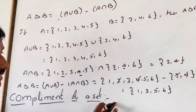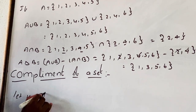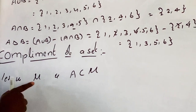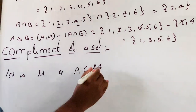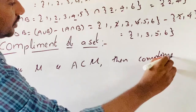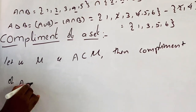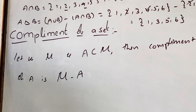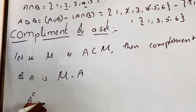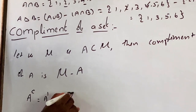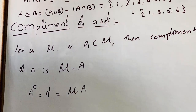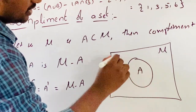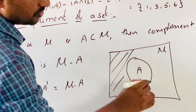Now, the complement of set A. Let mu be a universal set and A be a subset of mu. The complement of A is mu minus A, denoted by A power C or A dash. A dash equals mu minus A. The shaded region in the Venn diagram outside A is called the complement of set A, i.e., A dash.